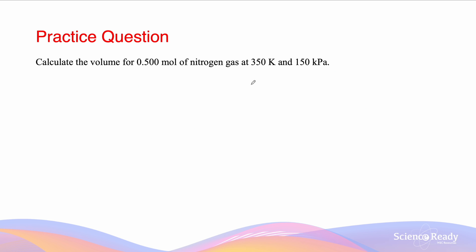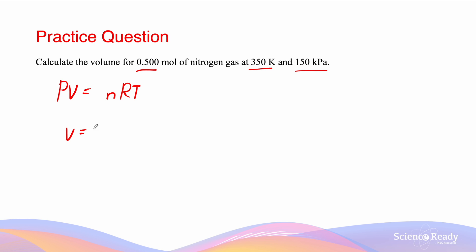For this next question we are not given any standard conditions — neither STP nor RTP — so we will need to use the ideal gas law. The formula for an ideal gas is PV = NRT, where P is pressure, V is volume, N is the number of moles, R is the universal gas constant, and T is temperature in Kelvin. N is given as 0.500 moles, T is 350 Kelvin, and P is 150 kPa.